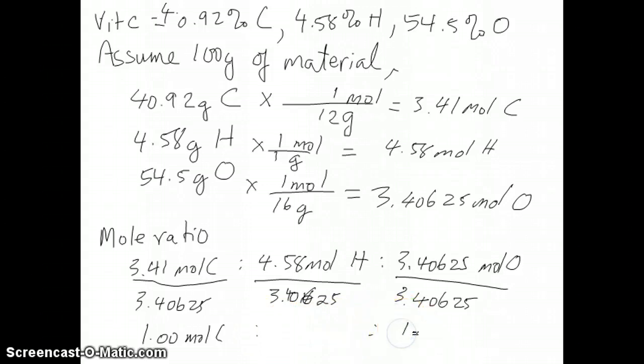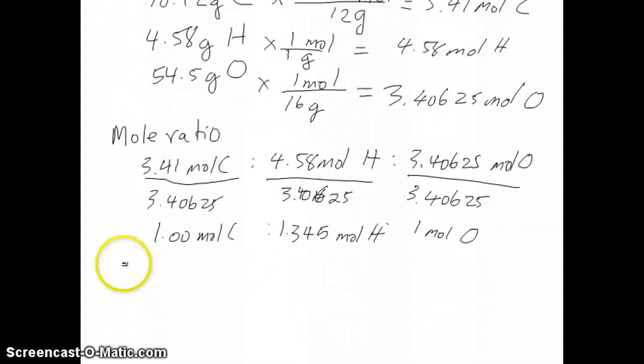If you do that, then what you have here is about 1.00 moles carbon. And this one will just be 1 mole of oxygen. And if you do this for the hydrogen, you actually get 1.345 moles hydrogen. So then what you see is that you have a ratio where you have one carbon to 1.345 hydrogen to one oxygen.